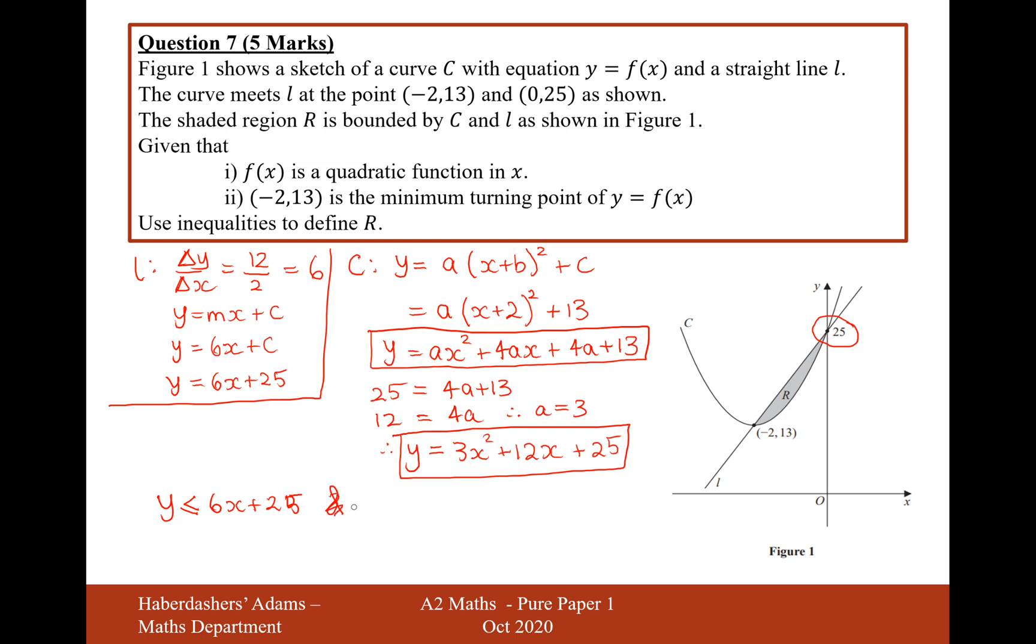And, so, and intersection, yeah, we'll just do an and. And then y needs to be more than the curved line, the y coordinate, so it's going to be more than or equal to 3x squared plus 12x plus 25.